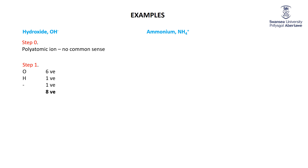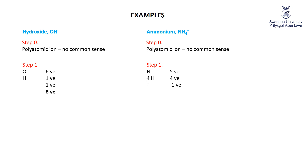Ammonium — NH₄⁺, a polyatomic ion — doesn't obey common sense. Step one: nitrogen has five valence electrons; hydrogen has one and we have four of them; the plus sign means you lose an electron. That's counterintuitive — losing an electron gives you a positive charge, gaining something gives a negative charge, because electrons are negative. So don't be confused by that when doing your valence electron count.